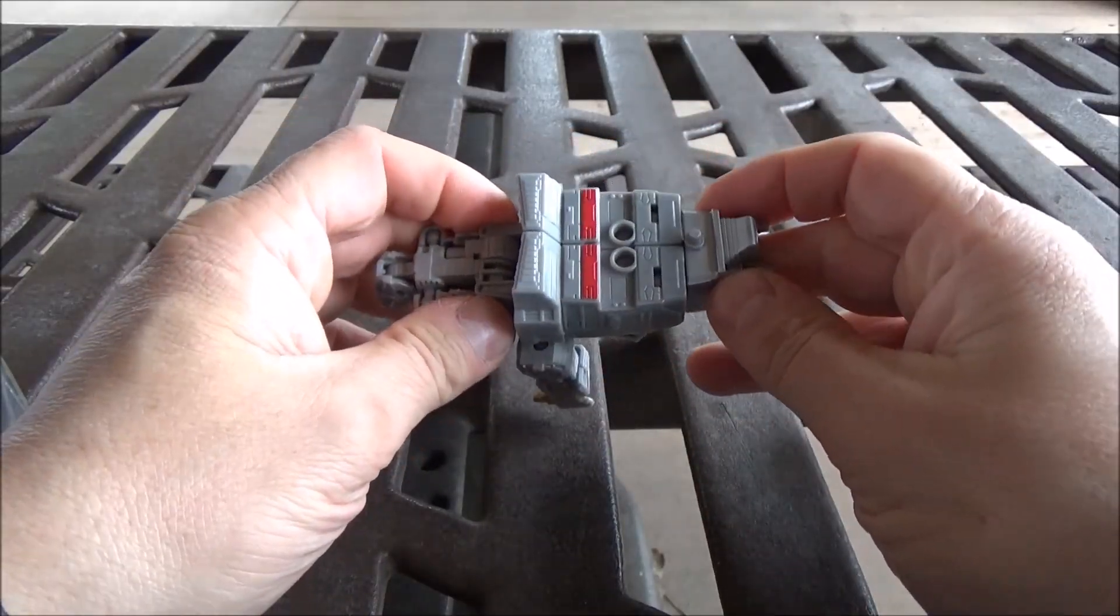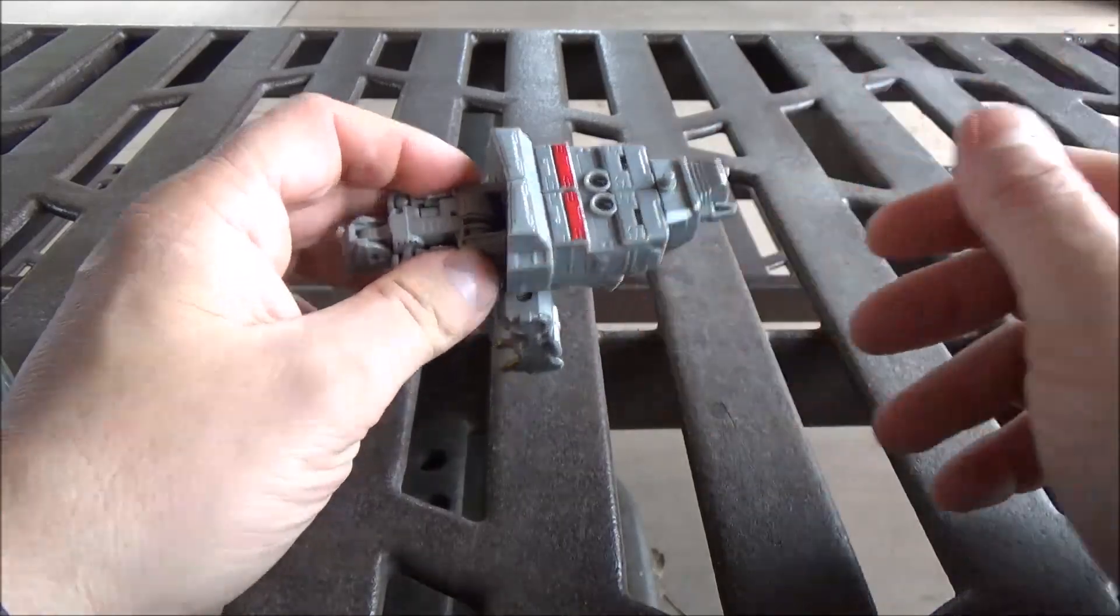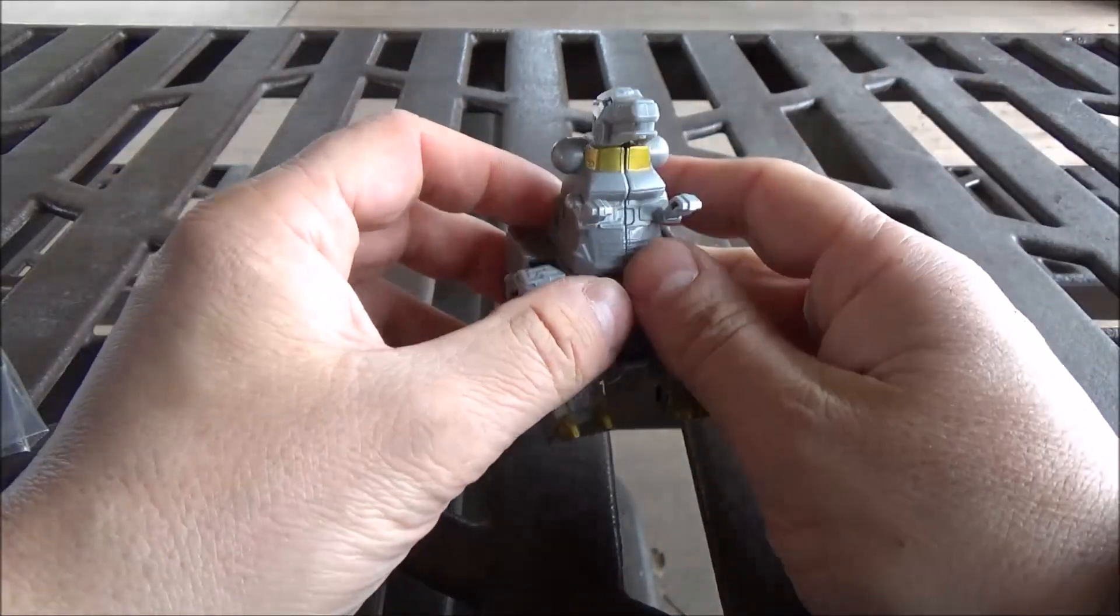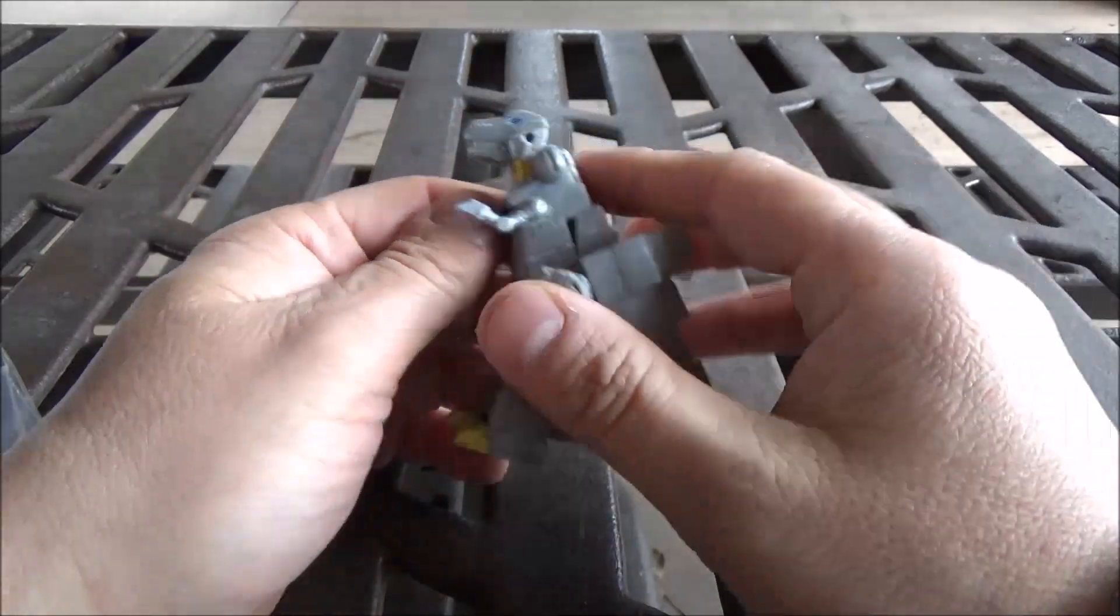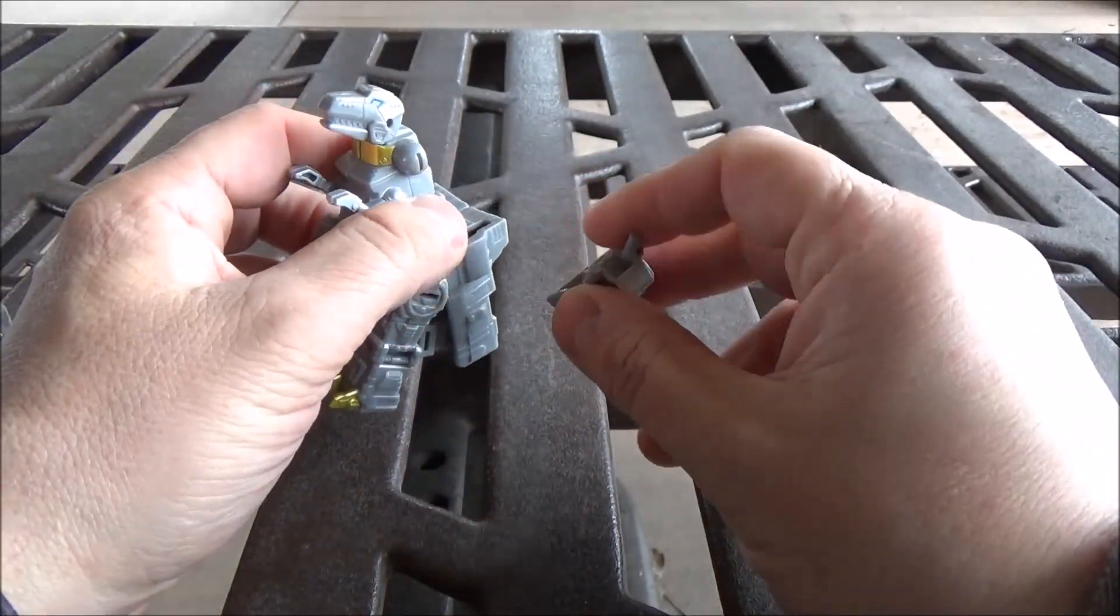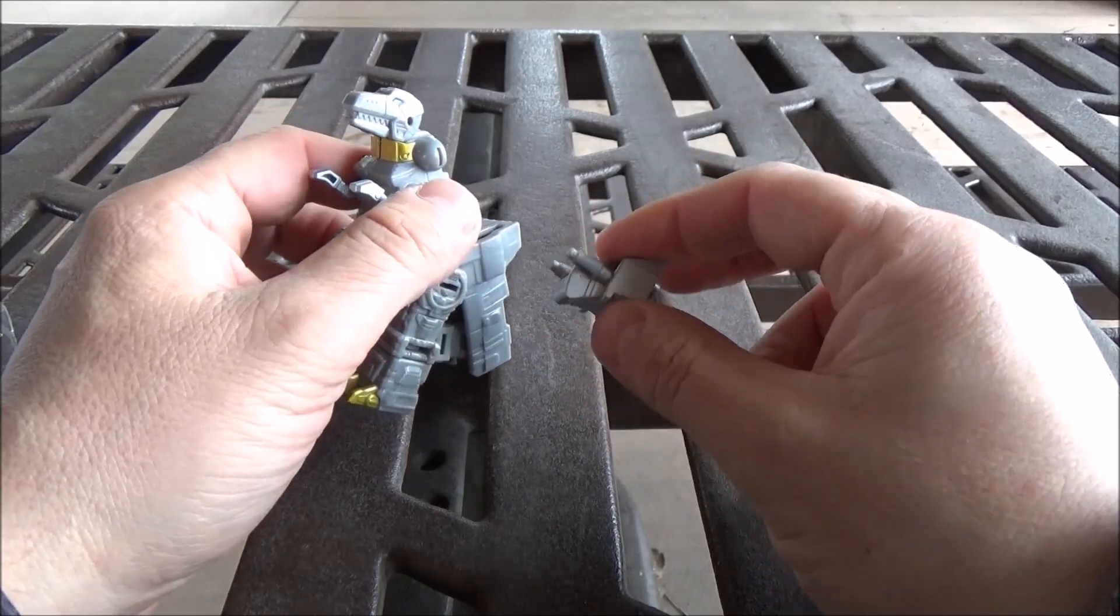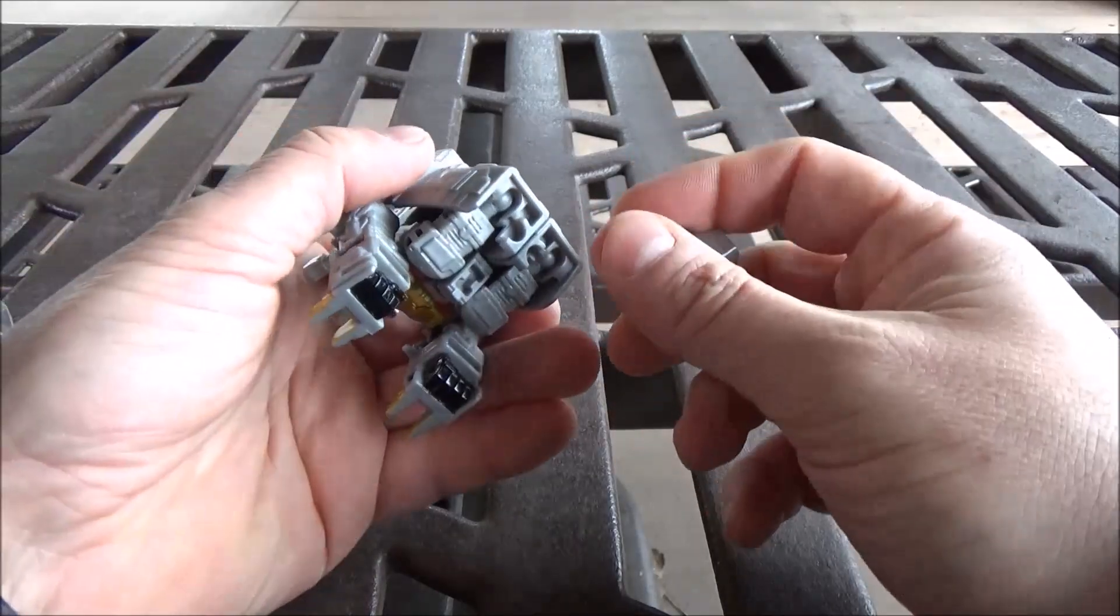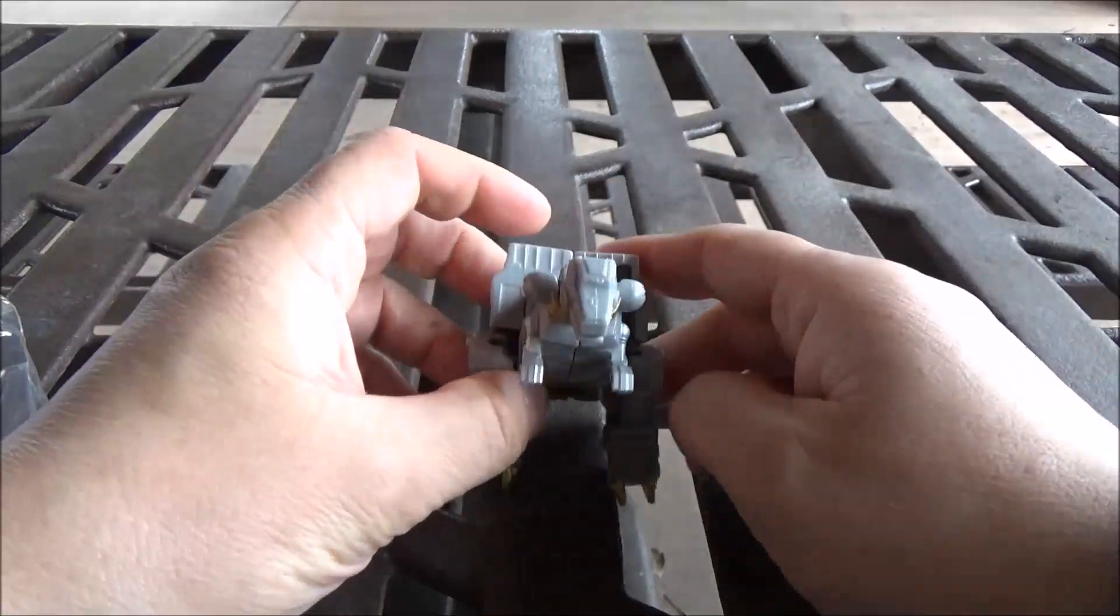And yeah, all of this. No articulation for the arms, rather. And for weapon, you have the tip of the tail, which becomes something resembling a gun, which is at least something.